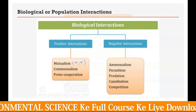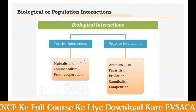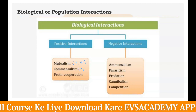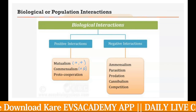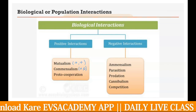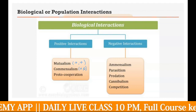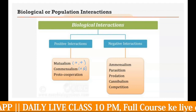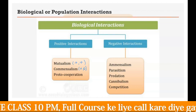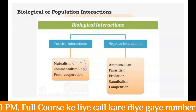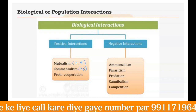In commensalism, one organism is benefited and the other is neither benefited nor harmed. For example, creepers climb high to get sunlight using tree branches, while the tree is not having any impact from this relationship with the creepers. That is a kind of commensalism relationship.